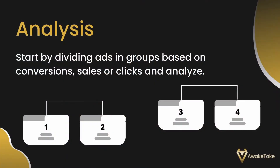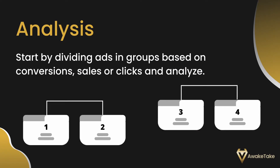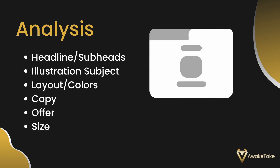Here are some ways you can do headline analysis or copy analysis, which may work even for your landing page. Start by dividing ads into groups based on conversions, sales, or clicks — usually the most important KPIs. Then look at the headlines and sub-headlines: examine the appeal, wording, size, and placement. For illustrations, look at size, style, and placement. For layout or colors, see if there's any overall difference between winners and losers. For copy, consider the amount, size, and style. For the offer, look at how the customer makes an order or purchase. Also consider the ad size in relation to the page it appears on. Bear in mind that many of these elements are almost set when you're thinking of a specific funnel, because those elements work together in a certain way to increase conversion rates.